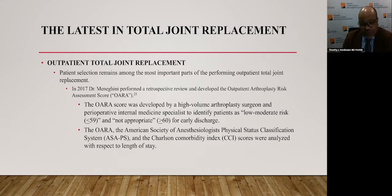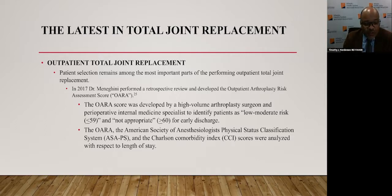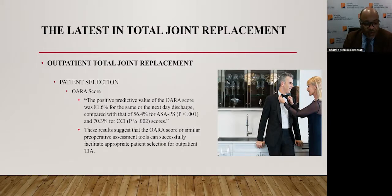Patient selection remains among the most important parts of performing outpatient total joint replacement. In 2017, Dr. Menangini performed a retrospective review and developed the Outpatient Arthroplasty Risk Assessment score — the AURA score — developed by a high-volume arthroplasty surgeon and a perioperative internal medicine specialist to identify patients as low, moderate, or not appropriate for early discharge stratification. The AURA score, ASA, and Charlson Comorbidity Index scores were analyzed with respect to length of stay. The AURA score had a positive predictive value of 81.6% for same-day or next-day discharge, compared to 56.4% for the ASA and 70.3% for the CCI, suggesting the AURA score can successfully facilitate appropriate patient selection for outpatient TJR.